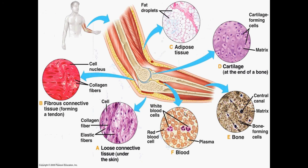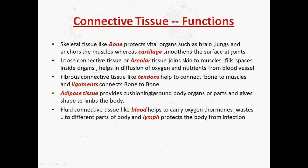Let us now look at the important functions of the different kinds of connective tissue. Skeletal tissue like bone protects vital organs such as the brain and lungs, and anchors the muscles. The skull bears any kind of stresses and shocks, protecting our brain from damage. The bones also form the ribs, which protect the lungs from any kind of external shocks or damage.